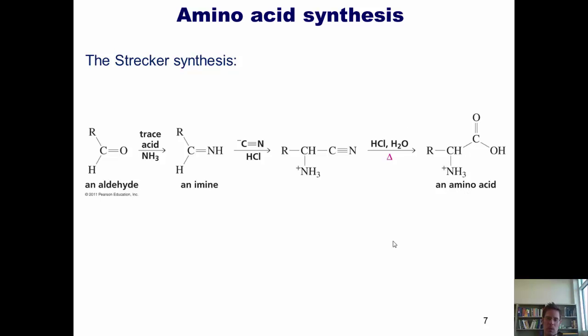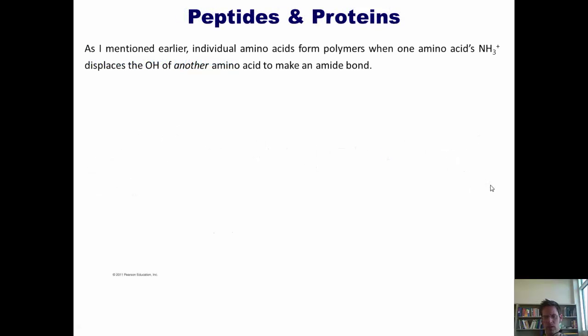Now, there are ways to separate the two enantiomers that are discussed in your book, but for lack of time, I'm not going to share those with you today. Now, as I mentioned earlier, individual amino acids form polymers when one amino acid's NH3+ or amine group displaces the OH of another amino acid's carboxylic acid group to make an amide bond. Let's take a look at that.